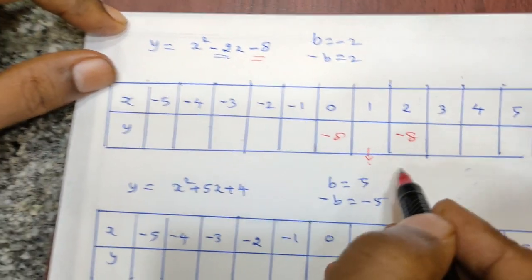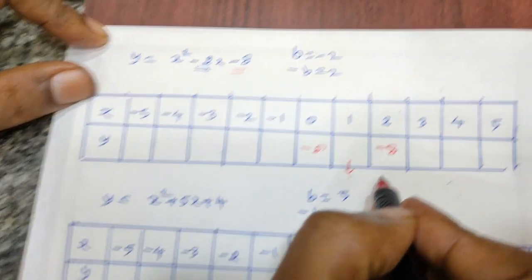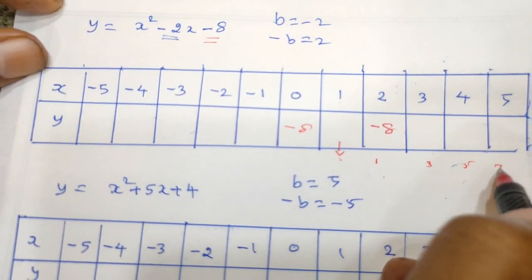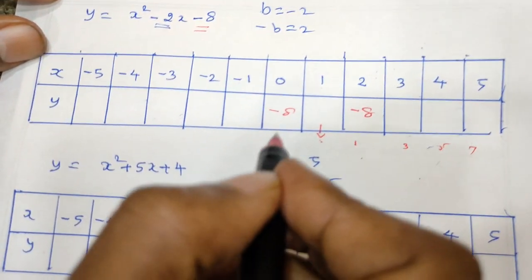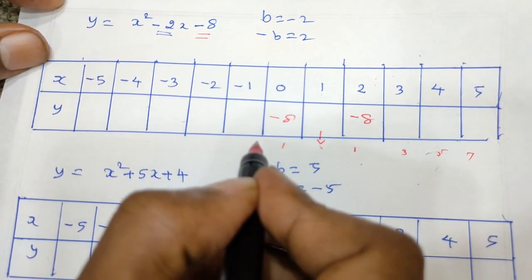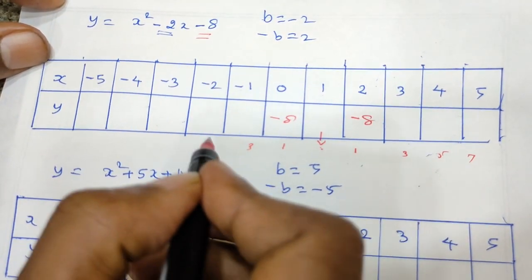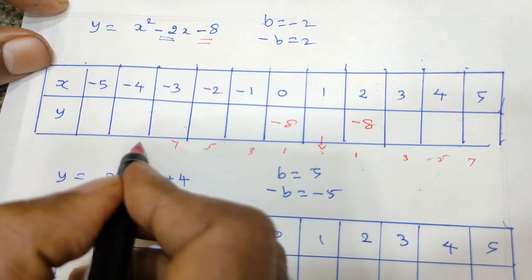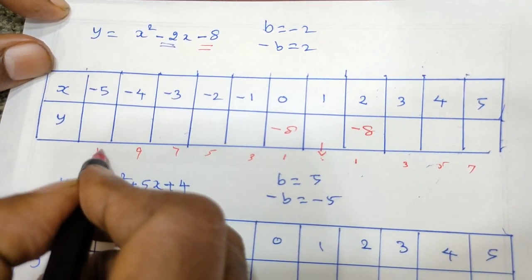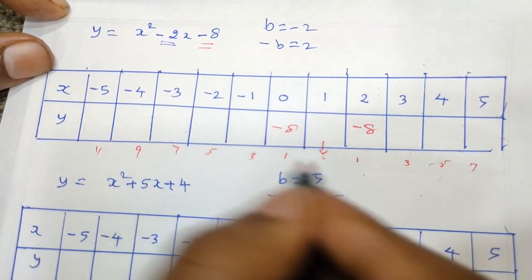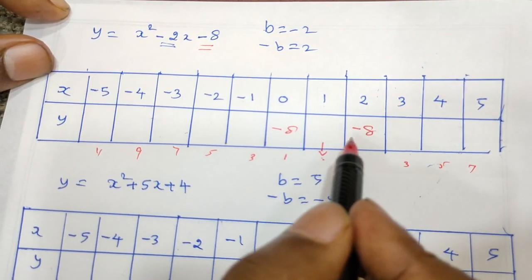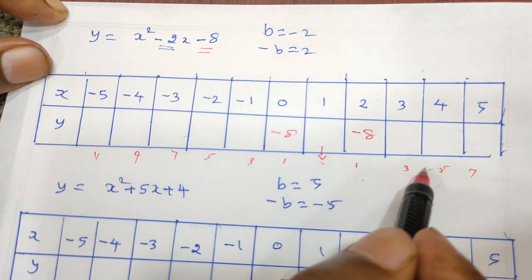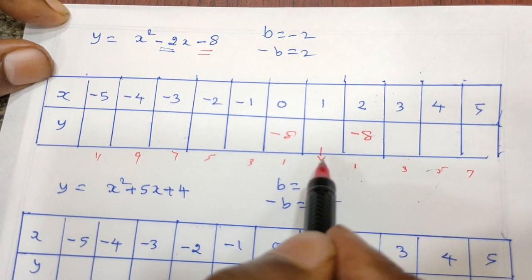Let's start. 1, 3, 5, 7, 9, 11 — add. Now let's add.